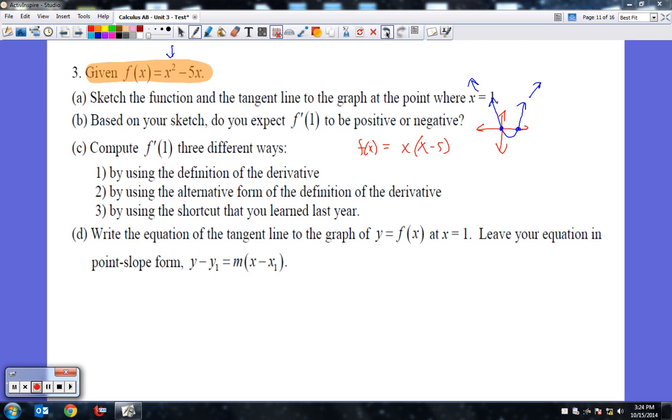So what we're going to do is sketch the function and the tangent line to the graph at x equals one. If this is at x equals zero, this is at x equals five, x equals one is somewhere around here. If I sketch the tangent line, it's going to intersect the graph here with a negative slope like this. So we just completed part A.